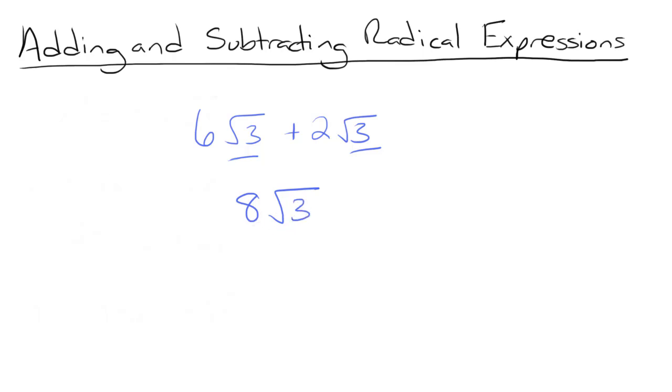Let's try another one. What if we do 14 root 6 minus 9 root 6? Our radicals are the same for this problem as well, so all we have to do is subtract our coefficients. 14 minus 9 is equal to 5, so our answer is 5 root 6.